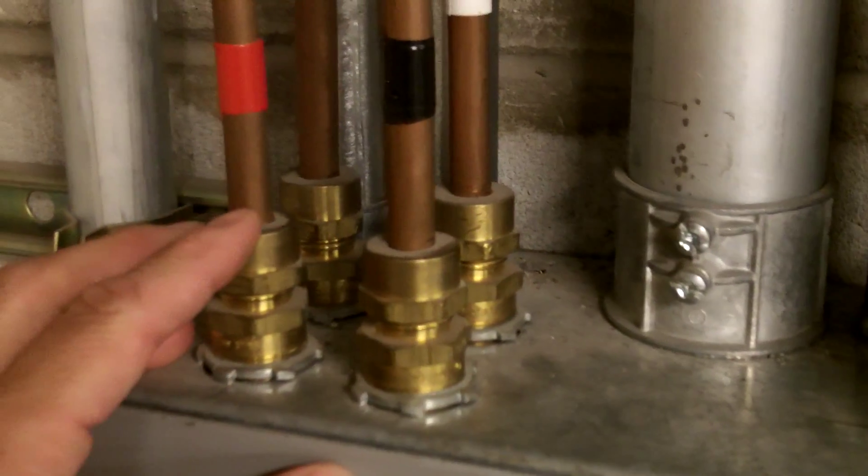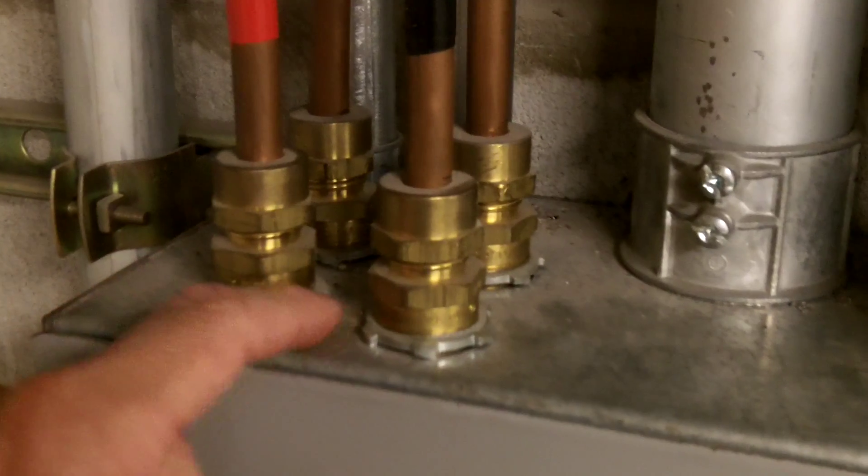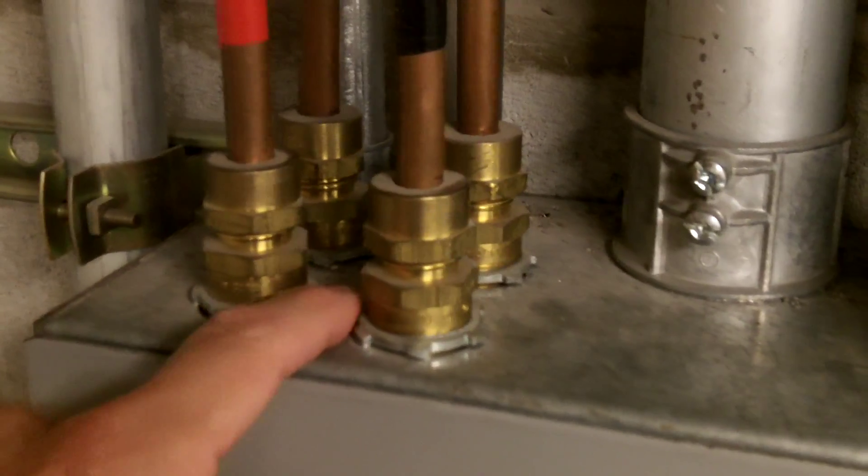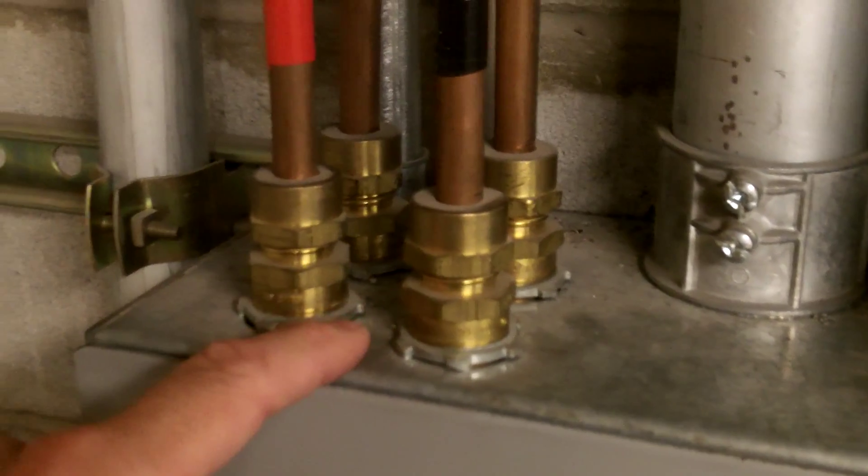When you have individual conductors like this connected to a ferrous metal cabinet, you don't want to have steel or ferrous metal in between each conductor opening, because this metal will heat up because of the magnetic field.